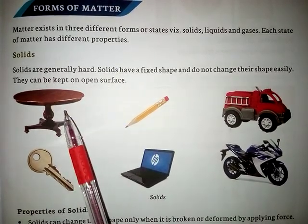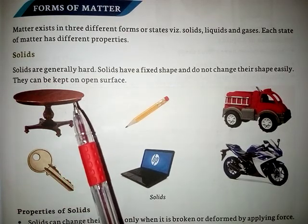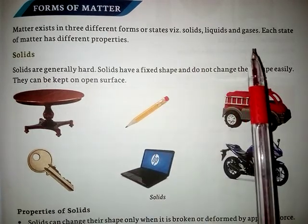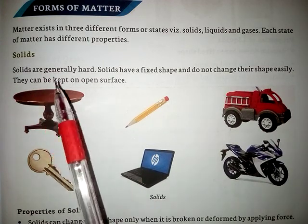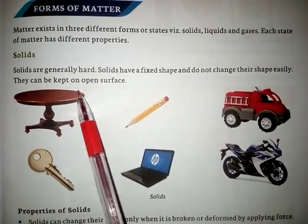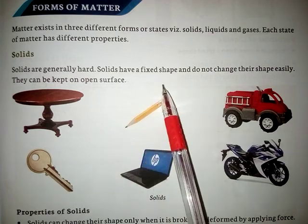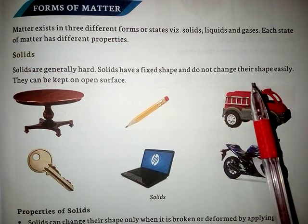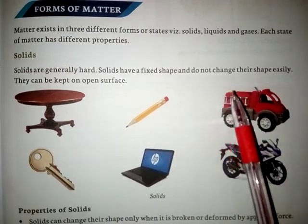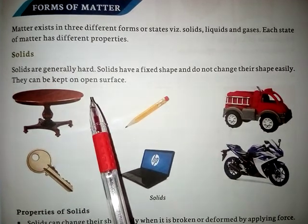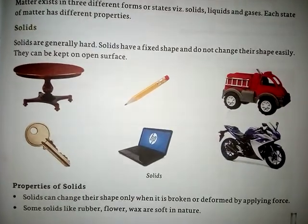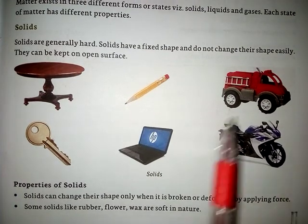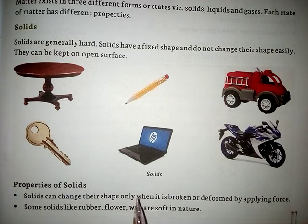Matter teen different forms mein exist karta hai, aur teen forms hain: solid, liquid, aur gases. Yesterday I told you about this. Today, first of all, we will know about solids. Solids kya hote hain? Solids are generally hard. Solids ka shape fixed hota hai aur unka shape change nahi hota. They can be kept on an open surface. Solids can change their shape only when broken or deformed by applying force.